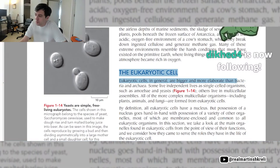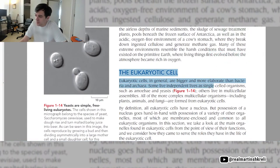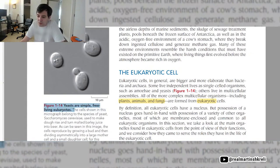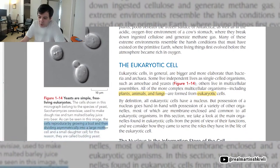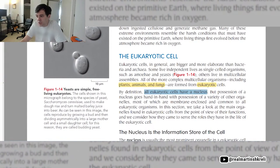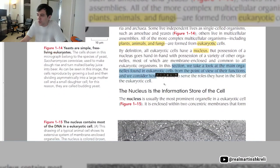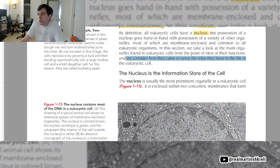The eukaryotic cell. Eukaryotic cells, in general, are bigger and more elaborate than bacteria and archaea. Some live independent lives as single cell organisms, such as amoeba and yeasts. Others live in multicellular assemblies. All of the more complex multicellular organisms, including plants, animals, and fungi, are formed from eukaryotic cells. Figure 1.14. Yeasts are simple, free-living eukaryotes. The cells shown in this micrograph belong to a species of yeast, Saccharomyces cerevisiae, used to make dough rise and turn malted barley juice into beer. That's where you get cerevisiae. As seen in this image, the cells reproduce by growing a bud and then dividing asymmetrically into a mother cell and a small daughter cell. For this reason, they are called budding yeast. By definition, all eukaryotic cells have a nucleus. That's why they're eukaryotes. But possession of the nucleus goes hand-in-hand with possession of a variety of other organelles, most of which are membrane-enclosed and common to all eukaryotic organisms. In this section, we'll take a look at the main organelles found in eukaryotic cells from the point of view of their functions.